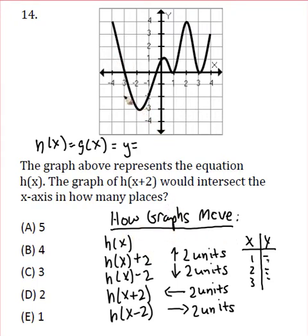So we're going to look back at the graph now. This is the graph of h of x. They want to know the graph of h of x plus two intersects the x axis in how many places. What happens? This is just going to move everything two units to the left. So every single one of these points that's intersecting the x axis, we've got one, two, three, four.